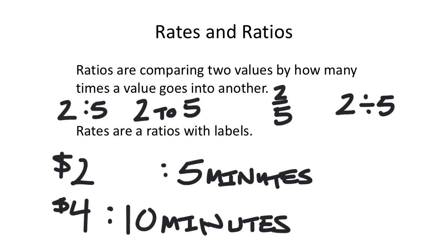Since we just finished a unit on fractions, most of this will be related in terms of fractions. We can have labels in fractions as well — for instance, two dollars for five minutes as a fraction, which makes that now a rate.